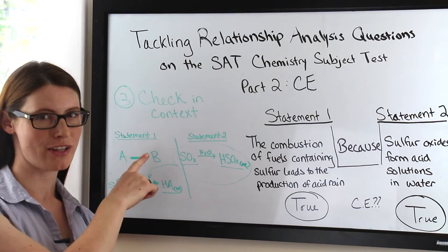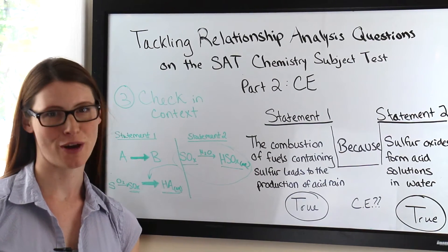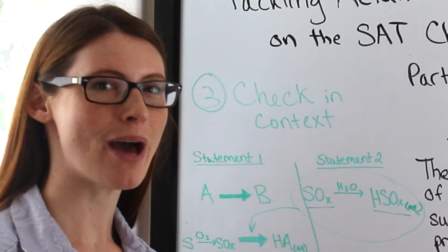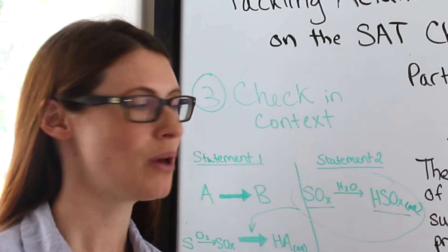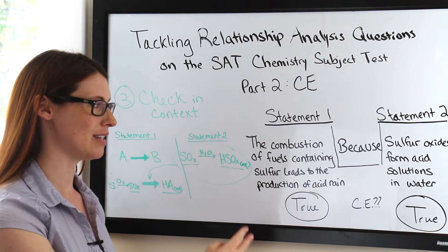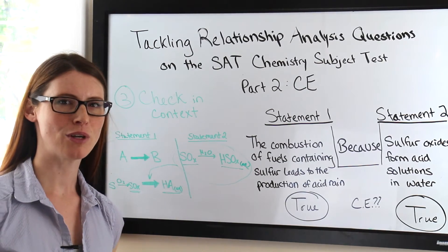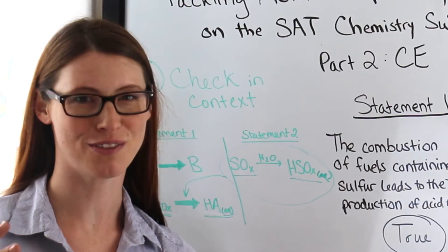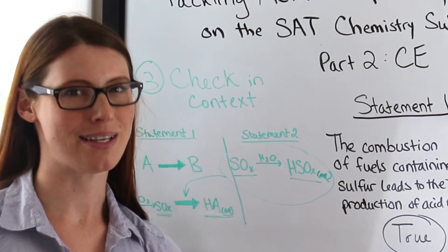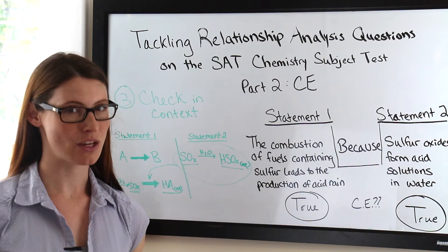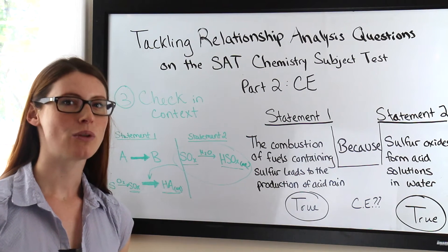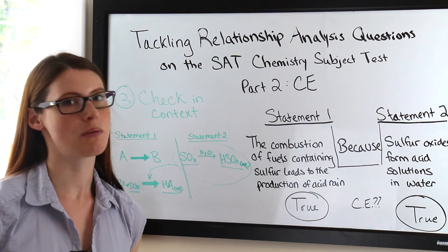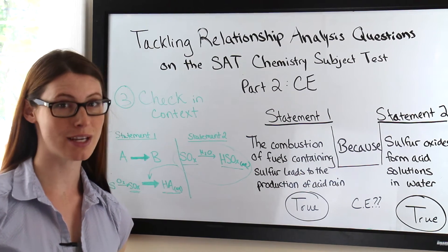The third step is check in context. This is optional if you're really sure about your chemistry. However, if you're a little shaky and not quite sure you have the right answer, go back and bring in the details. We can read that the combusting of fuels containing sulfur leads to the production of acid rain. We know that combusting those fuels will make them rise on their heat, they'll combine with the atmospheric water, and they'll precipitate out as rain. Therefore it makes sense in the context of the question. Checking will either give you a confidence boost that you're correct, or it will expose a major flaw and let you know you need to go back and re-examine your assumptions.